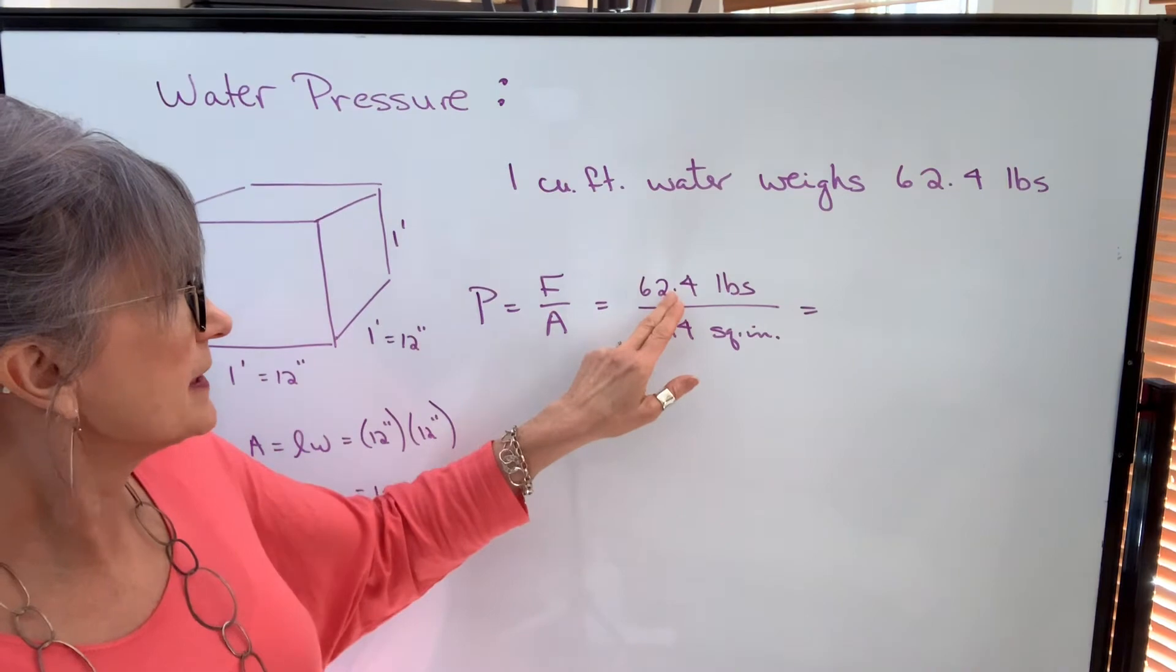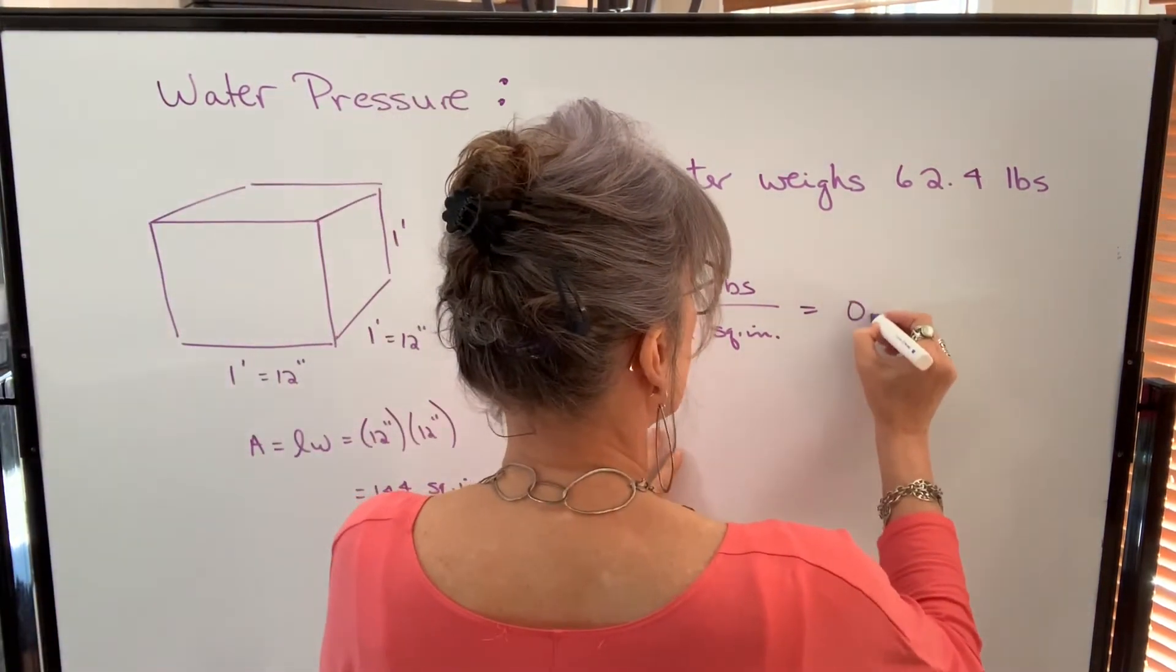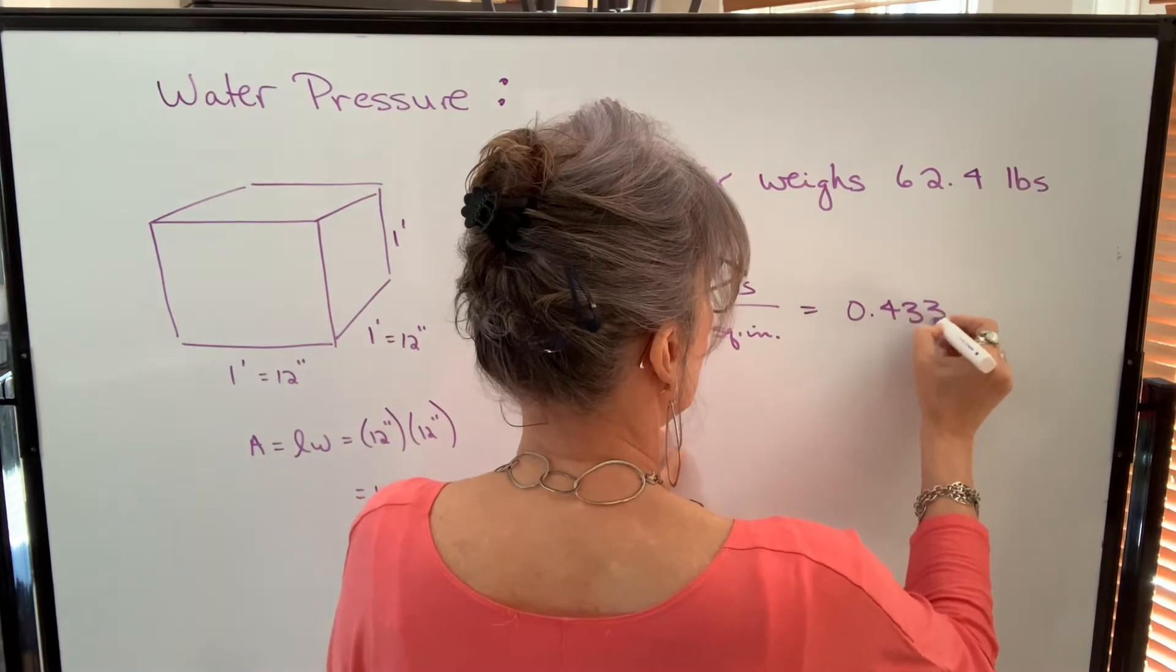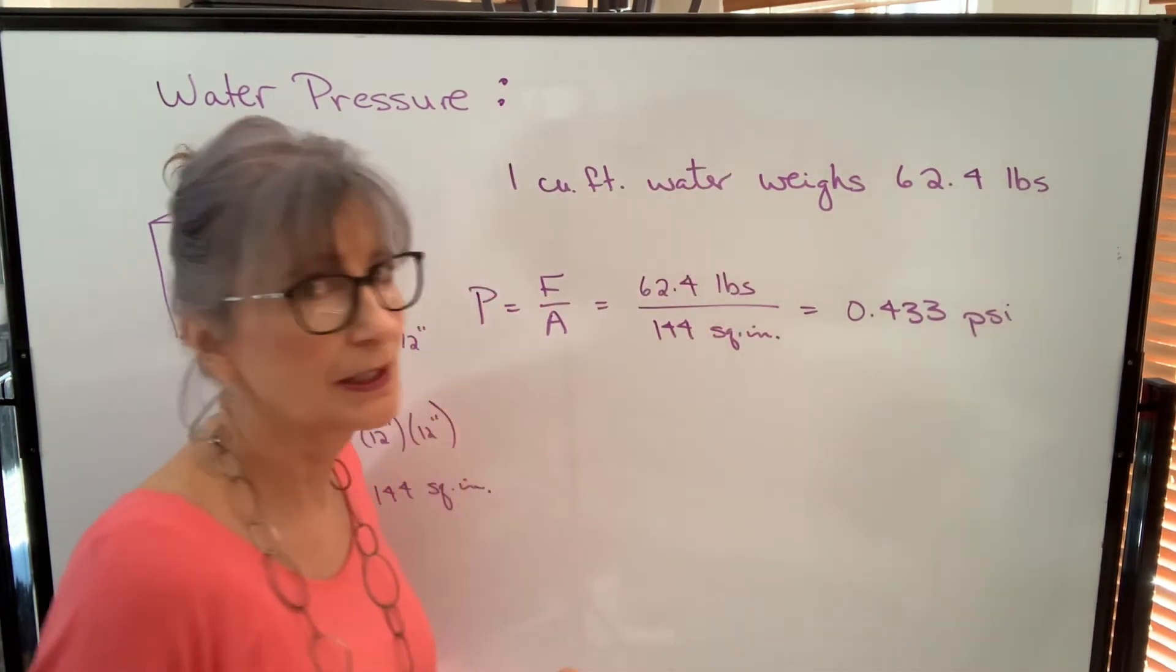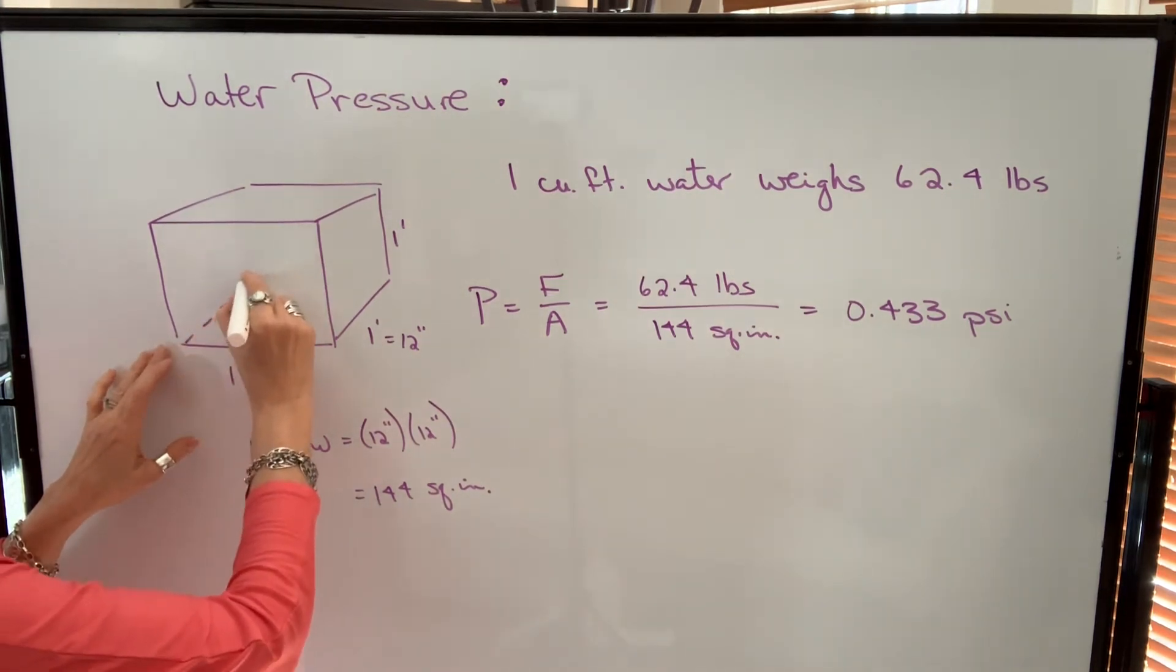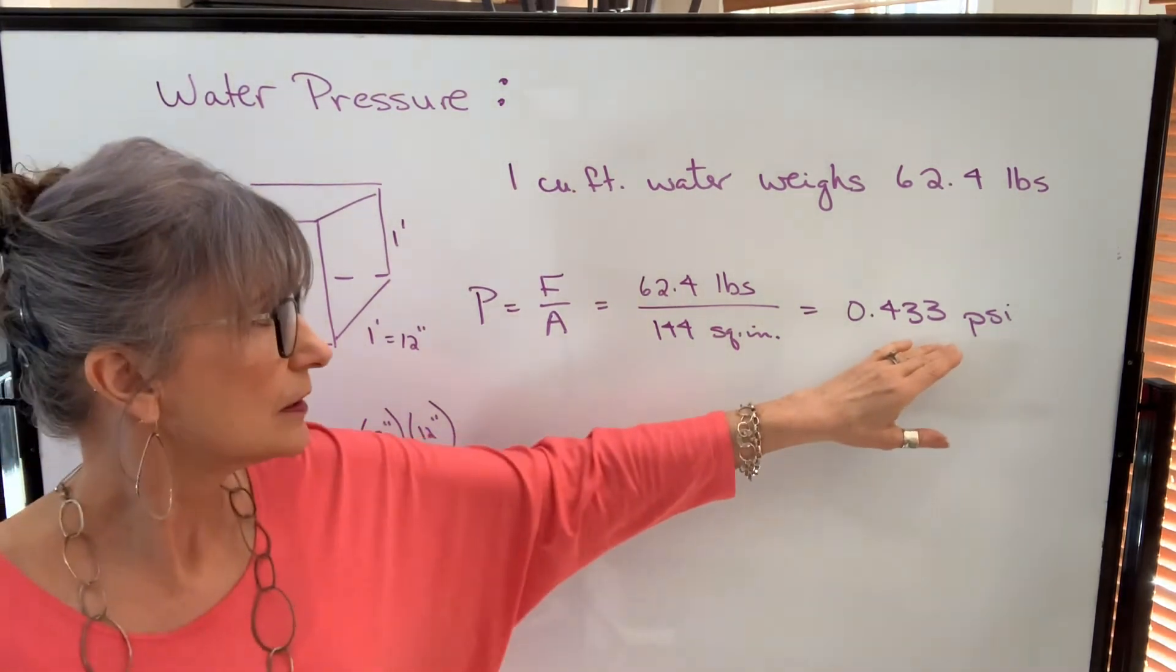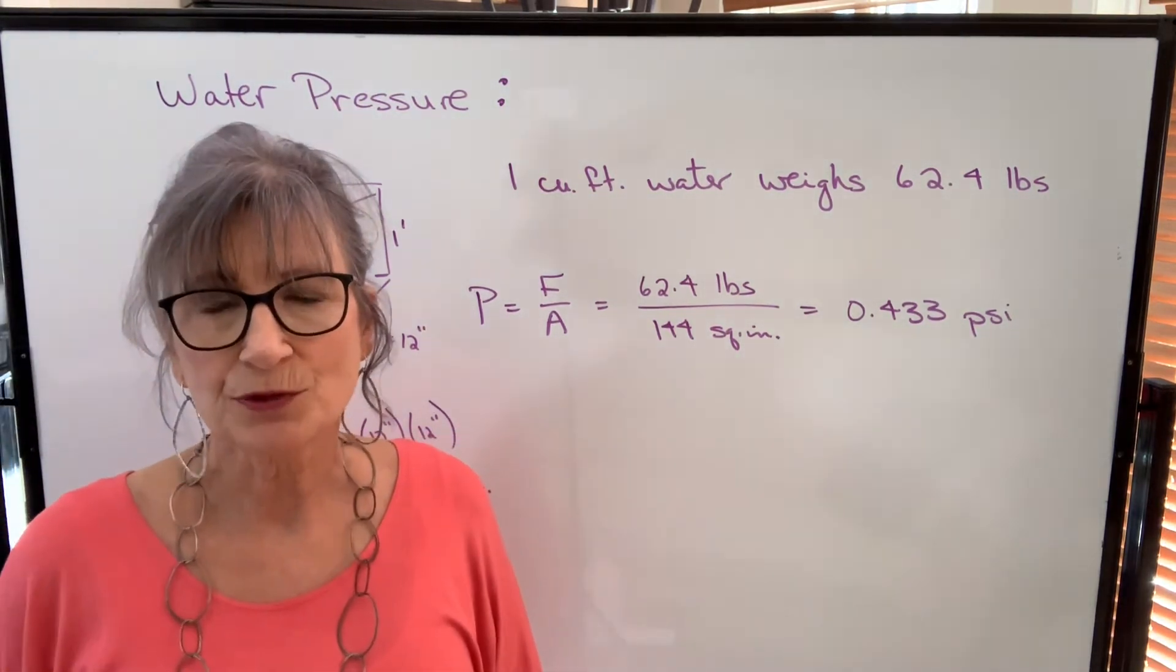If we were to divide 62.4 by 144, we will get 0.433 pounds per square inch. So the pressure that that water is creating on the base of this container is 0.433 pounds per square inch.